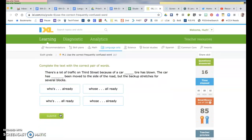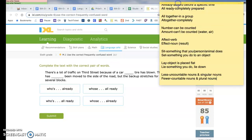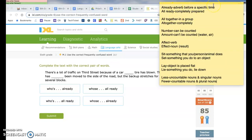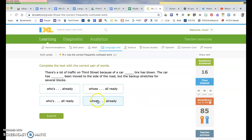There's a lot of traffic on 3rd Street because of a car whose tire has blown. The car has already. So remember, already, an adverb before a specific time, or already like completely prepared. This whose means who is, so there's a lot of traffic on 3rd Street because of a car whose tire. Or this one, which is possessive, whose. So I think it's this one.